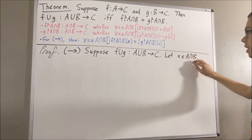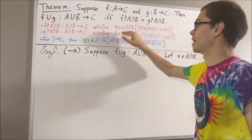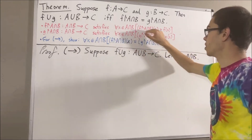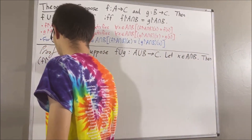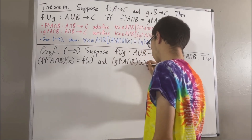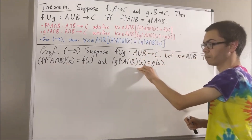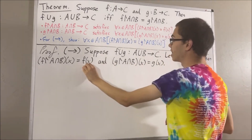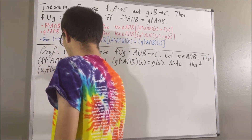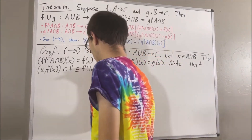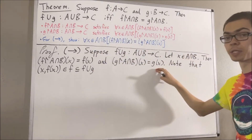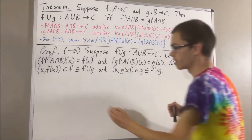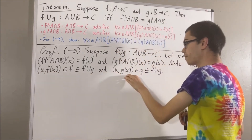Since x is an element of A∩B, we know the restriction properties hold for x, giving us two statements. We know that the ordered pair (x, f(x)) is an element of f, and f is a subset of the union of f and g. Similarly, the ordered pair (x, g(x)) is an element of g, and g is a subset of the union of f and g. So (x, f(x)) and (x, g(x)) are both elements of the union of f and g.